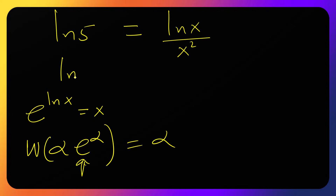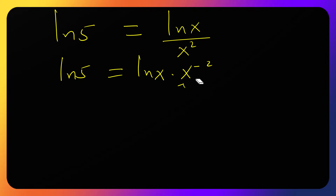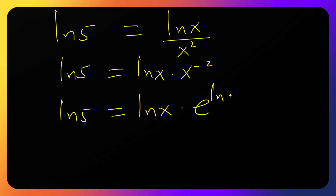So I'll rewrite ln x over x squared in linear form as ln x times x raised to negative 2. Since e raised to ln of something returns that thing, I'll take e raised to ln of this expression. Going back, the result will be x raised to negative 2. So we have: ln 5 equals ln x times e raised to ln x, times x raised to negative 2.